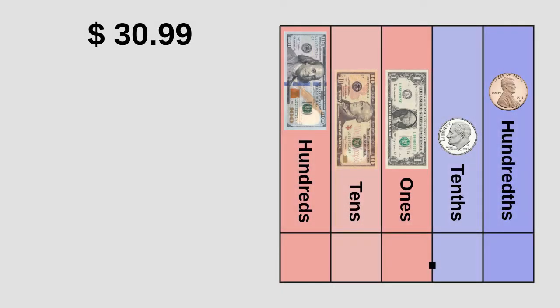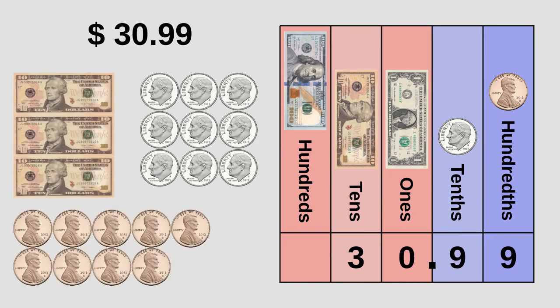Let's look at another example. Suppose we want to know what bills and coins we need to make 30 dollars and 99 cents. As we did before, we use our place value chart. We start with the dollar part — 30 dollars — putting zero in the ones column and three in the tens column. For the cents, 99 cents, we put the first nine in the tenths column and the other nine in the hundredths column. We need three ten-dollar bills, nine dimes, and nine pennies.